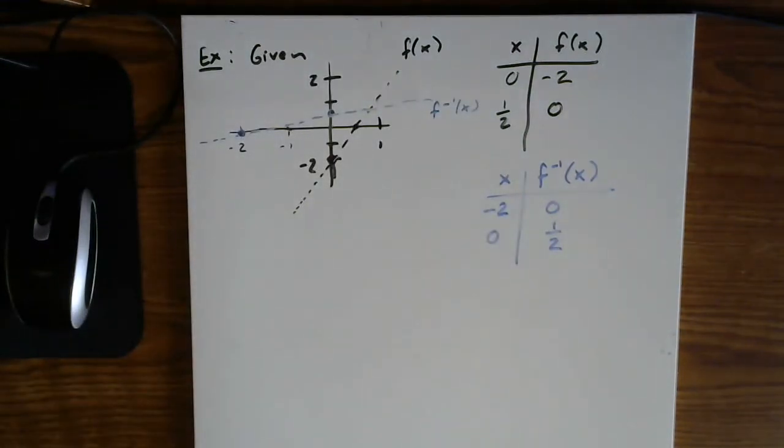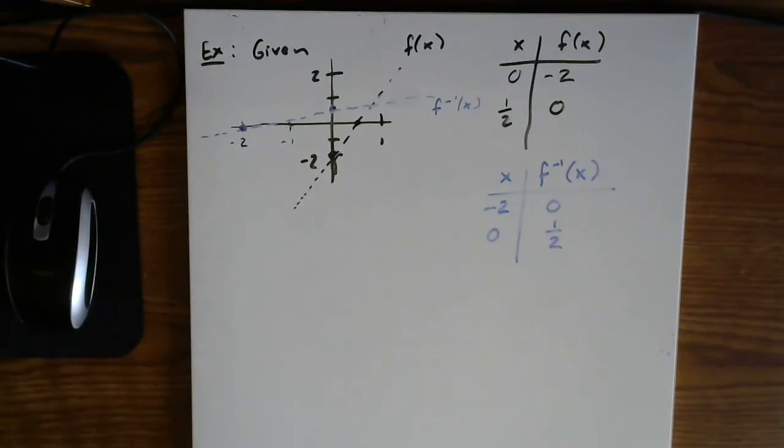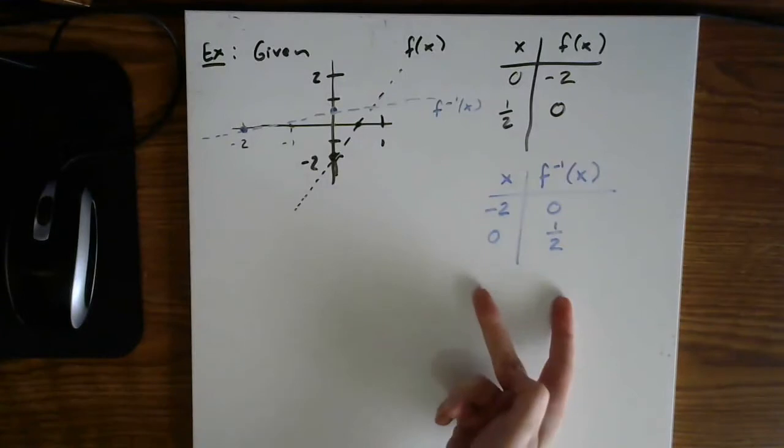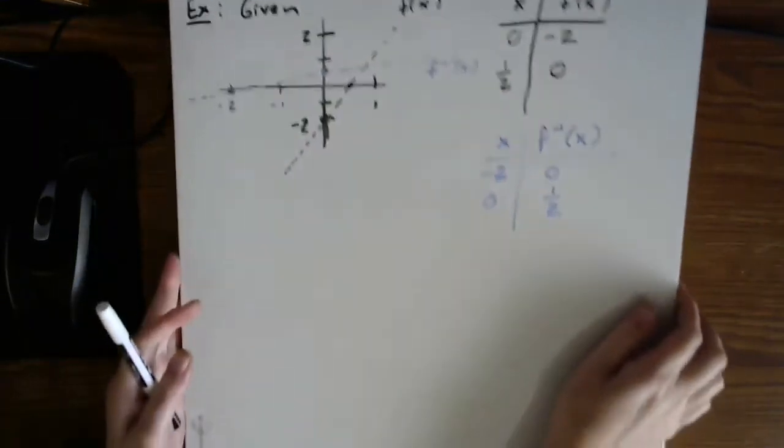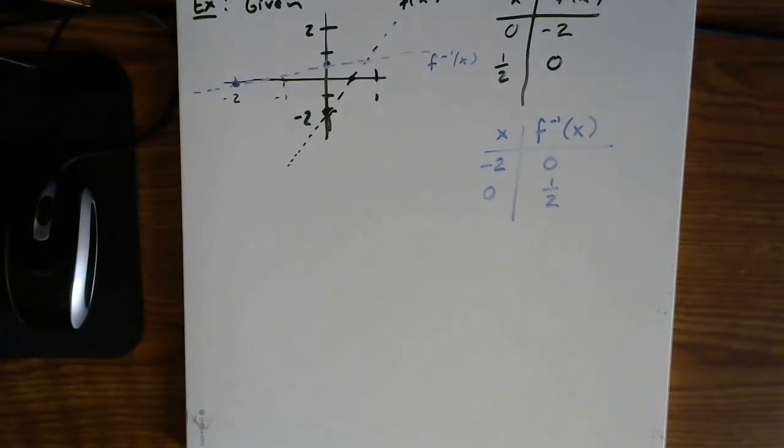So again, just a really quick example to help you kind of understand what we mean by an inverse. I literally mean swap domain and range. And that does affect the domain and range, of course, of the inverse function.